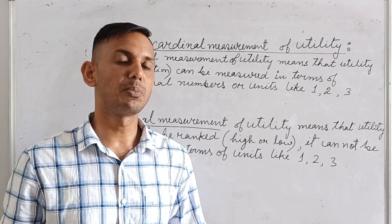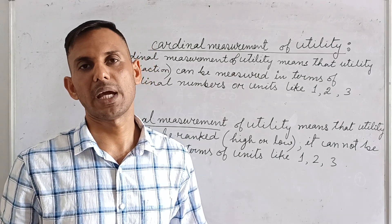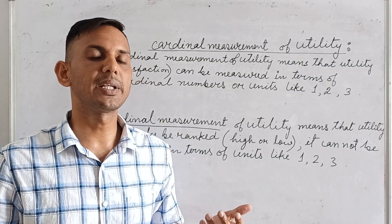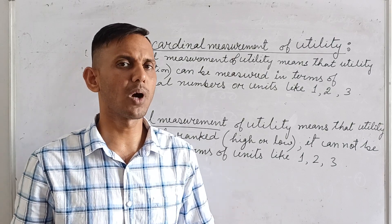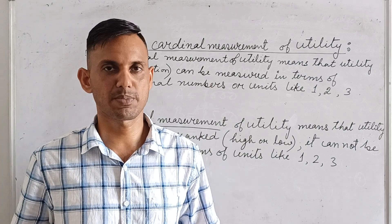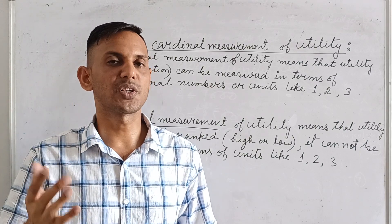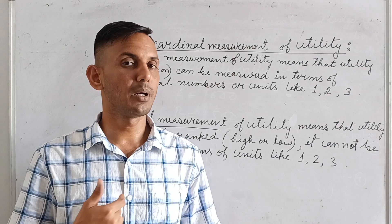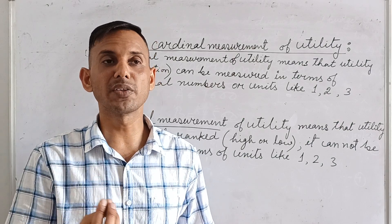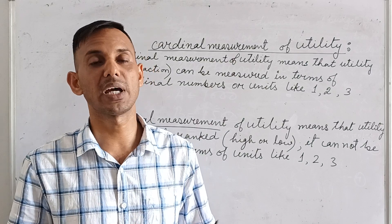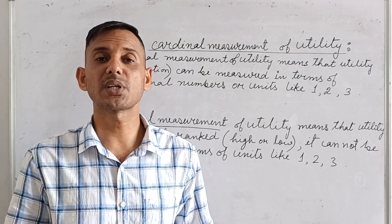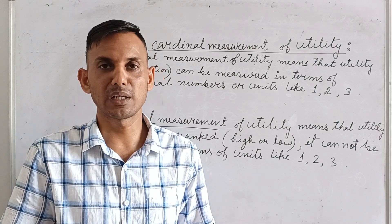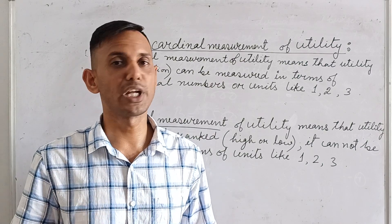For example, like 10, 11, 12. Alfred Marshall actually forwarded this utility analysis concept. But Hicks criticized it because satisfaction is a psychological concept — you cannot measure it in numbers. For example, if I ask you about my class, you cannot say 'I got 90 satisfaction' or '80 satisfaction,' but you can compare and say 'your class is better than yesterday's class' — you can give a rank.